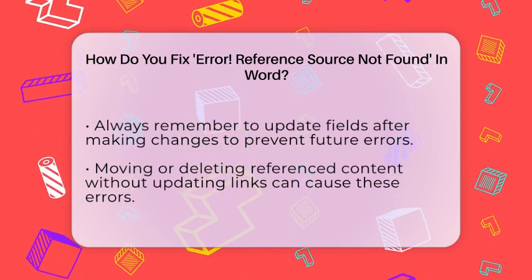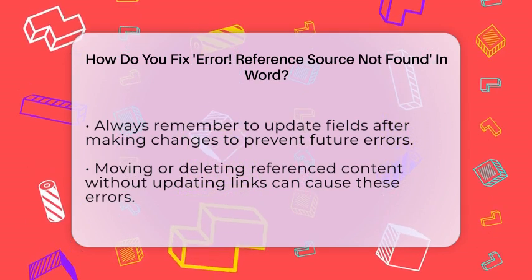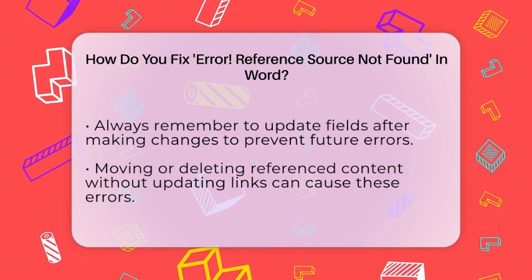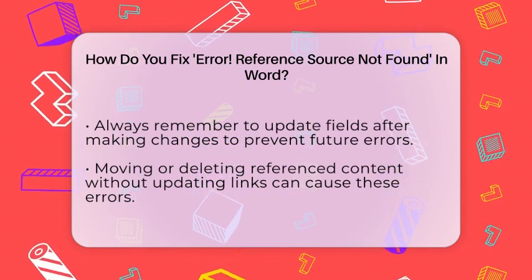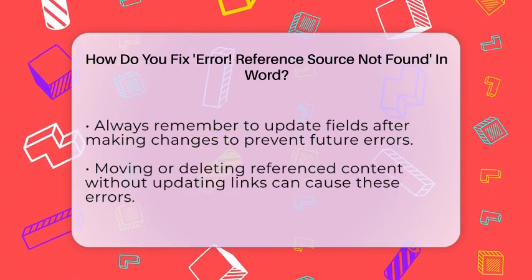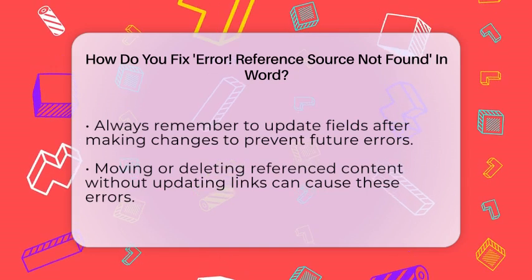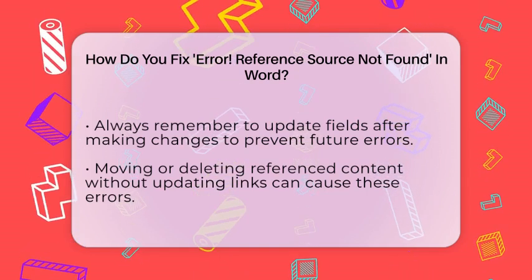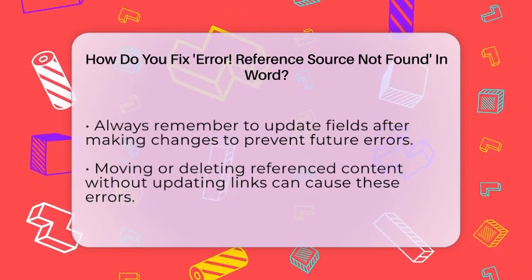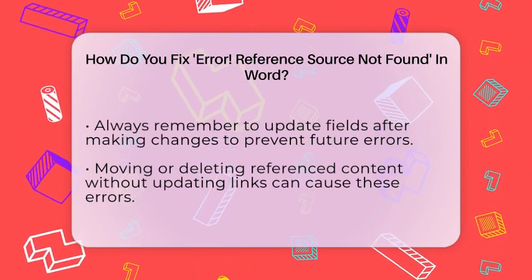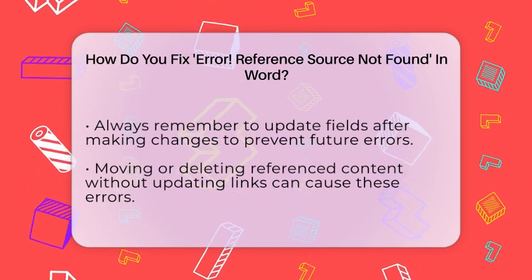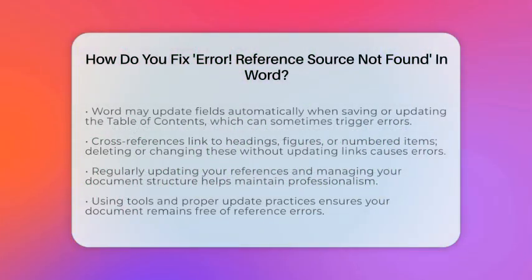To prevent these errors from happening again, always update your fields after making changes — press Ctrl+A, then F9 to refresh everything. Be cautious when deleting or moving items that are referenced elsewhere. If you do move or delete content, remember to update your cross-references afterward. When you update your table of contents or save your document as a PDF, Word might automatically update fields, which can sometimes cause these errors if sources are missing.